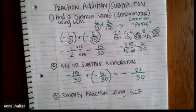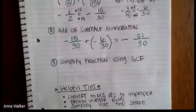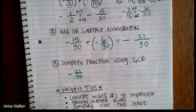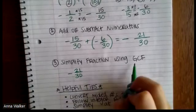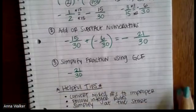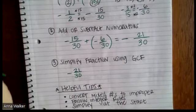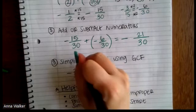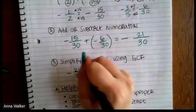However, the last step is we need to make sure to double check and see if we need to simplify. So we have negative 21 thirtieths. So we always check to see if we can simplify a fraction using the greatest common factor. The greatest common factor between 21 and 30 is we could divide both of these by three. They can both be divided by three.